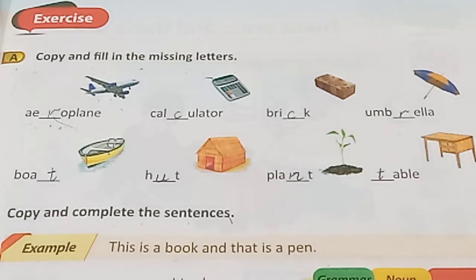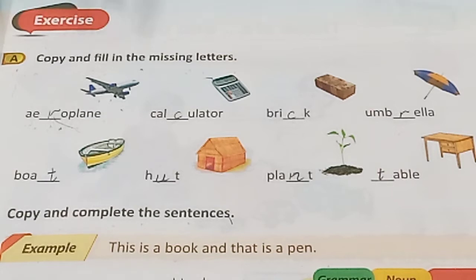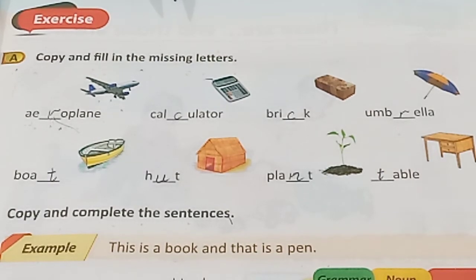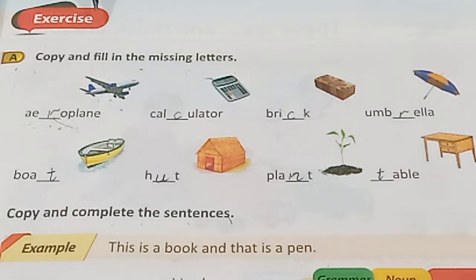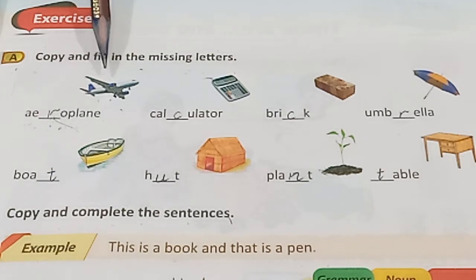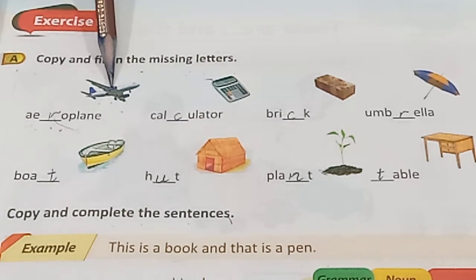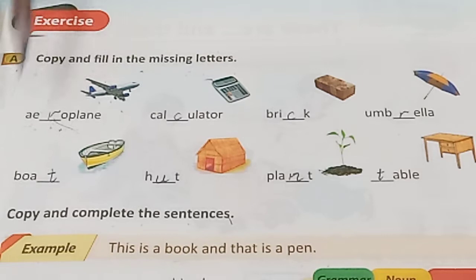Today we start Exercise Part A. Part A says: copy and fill in the missing letters. We fill these blanks with the help of the picture. Look at this picture — this is a picture of an aeroplane.